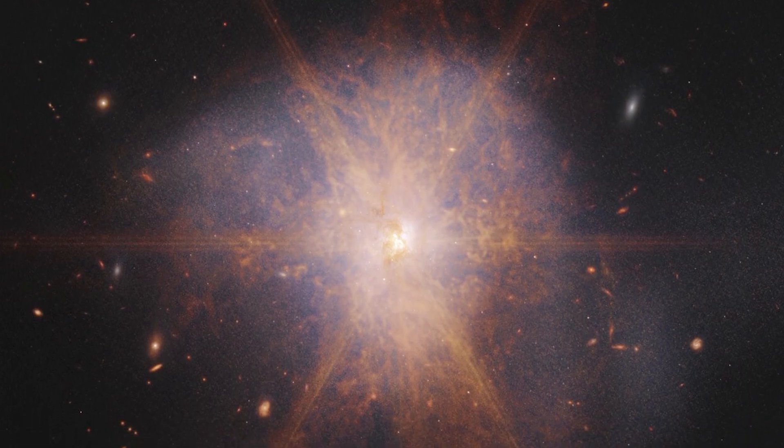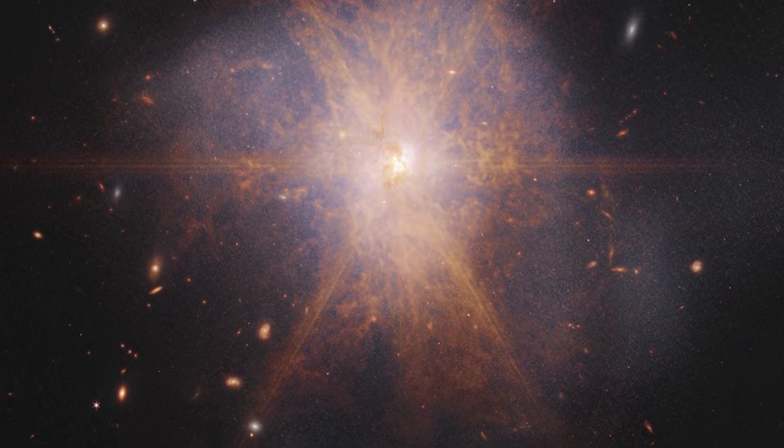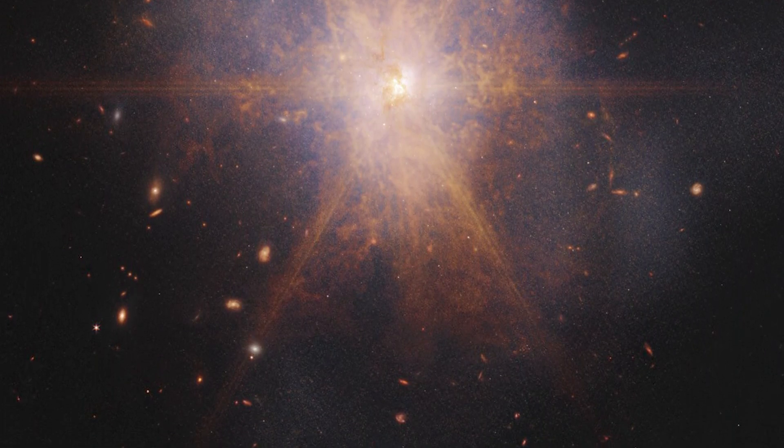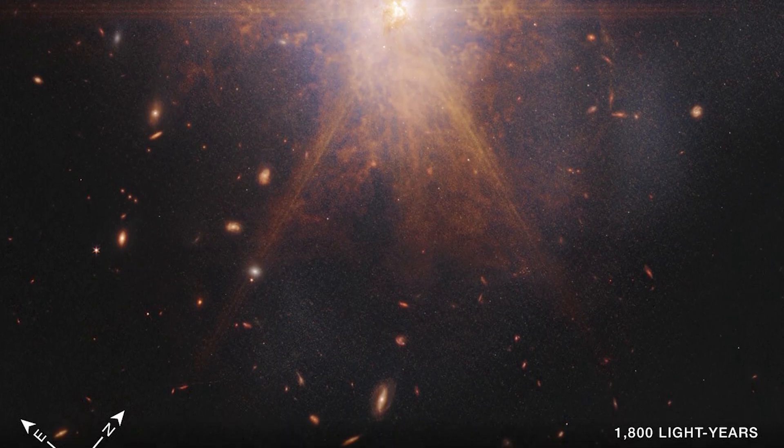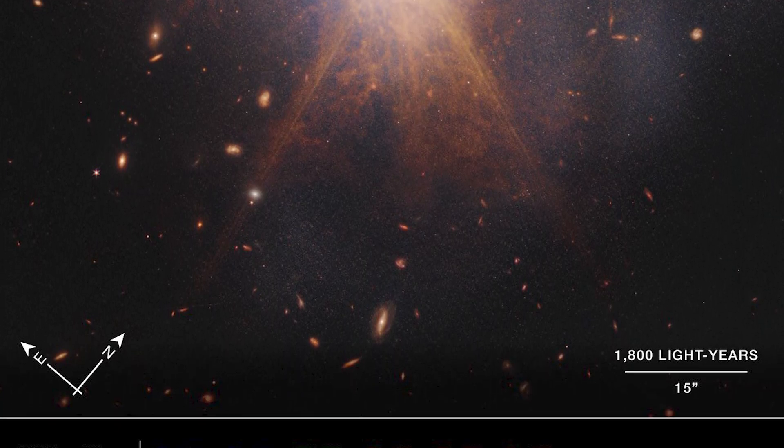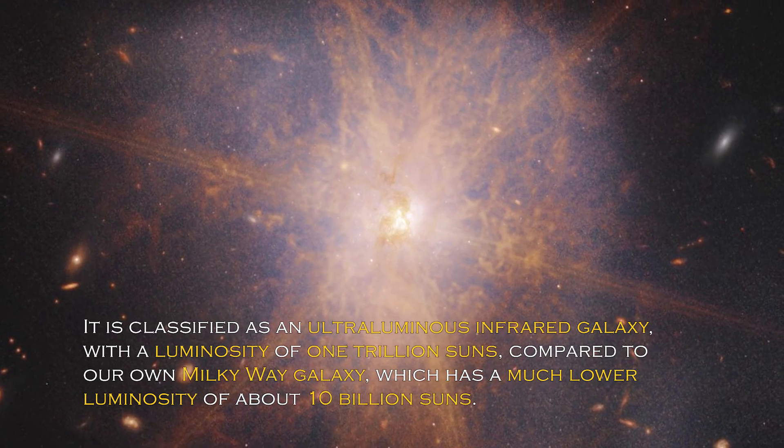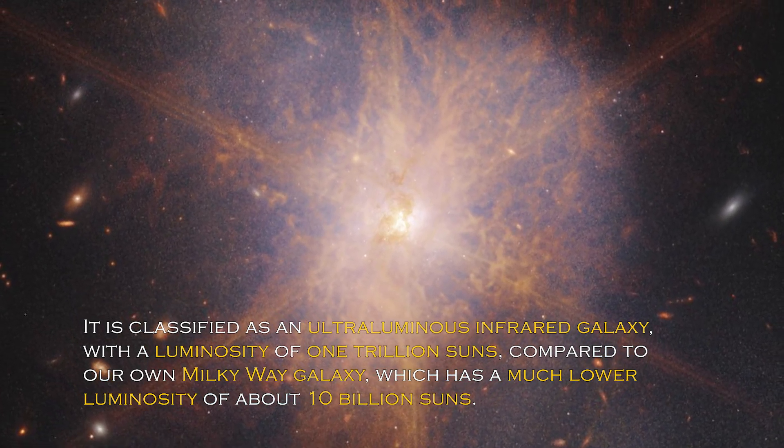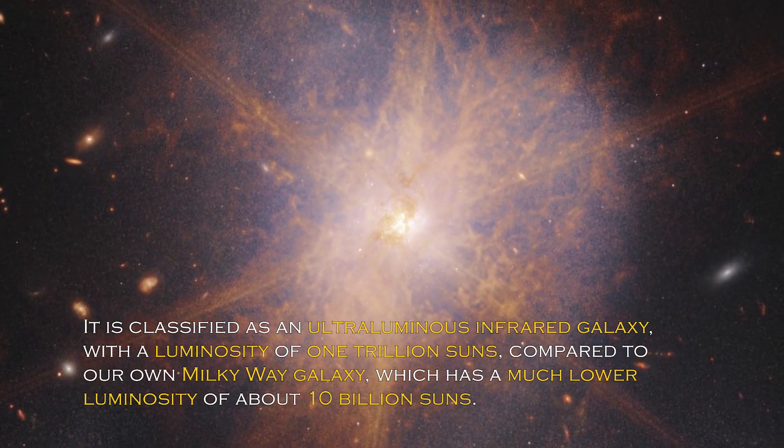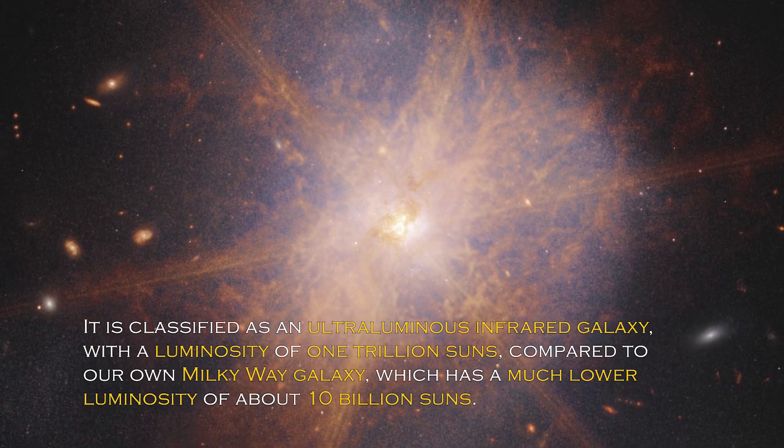When two spiral galaxies merge, the phenomenon known as ARP 220 shines brightest in the infrared, making it perfect for observation by the James Webb Space Telescope. It is classified as an ultra-luminous infrared galaxy, with a luminosity of one trillion suns compared to our own galaxy, the Milky Way, which has much lower luminosity of about 10 billion suns.